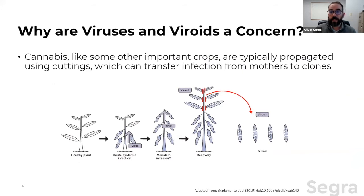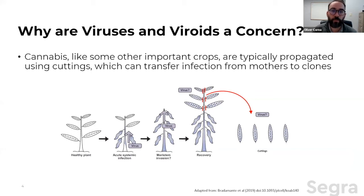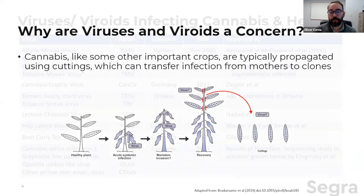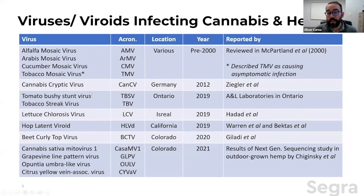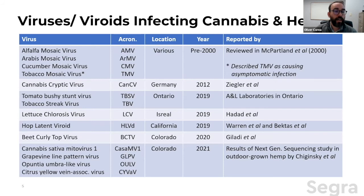Another issue with cannabis in particular is that it's typically propagated via cuttings. If you have an infected plant, that infection may or may not transfer to the cutting, depending on whether the part of the plant you're transferring is itself infected. This list represents viruses and viroids for which I've found solid evidence in the literature of infecting cannabis — a very small number relative to the 1,500 total, suggesting cannabis is generally pretty resistant to virus and viroid infection.